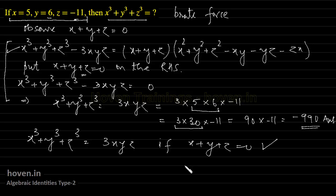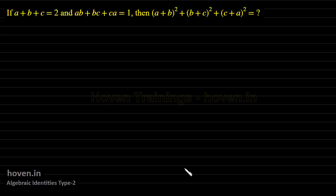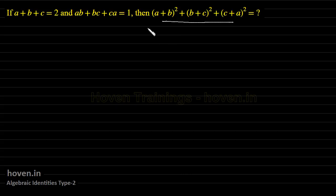Let us move on to our next question. If a plus b plus c equals 2, and ab plus bc plus ca equals 1, then what is the value of this expression? This example involves powers of 2 — squares — and these combinations also appear in the a plus b plus c whole square formula.